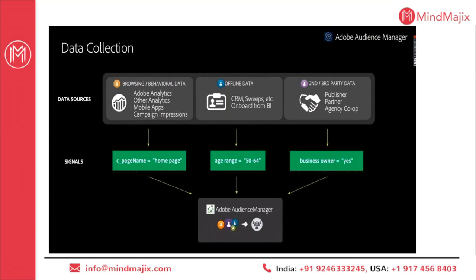Going into offline data — CRM data that we already have can be uploaded and merged with online data. Offline retail store data can also be connected into Audience Manager. For third-party data, there are a number of providers available in the marketplace which can be subscribed to as per our requirements. For second-party data, if we wish to partner with any second-party partner, we can do that seamlessly using DMP while maintaining data privacy.